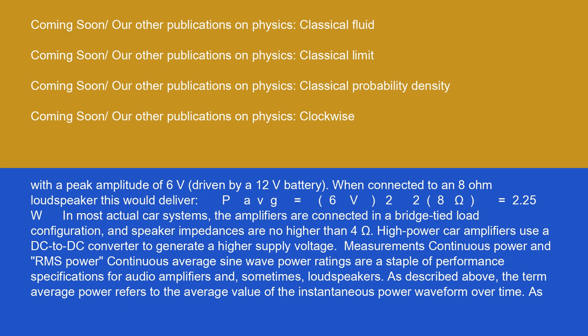When connected to an 8-ohm loudspeaker, this would deliver P_AVG equals 6V squared over 2 times 8 ohms equals 2.25W. In most actual car systems, the amplifiers are connected in a bridge-tied load configuration, and speaker impedances are no higher than 4 ohms. High-power car amplifiers use a DC-to-DC converter to generate a higher supply voltage.